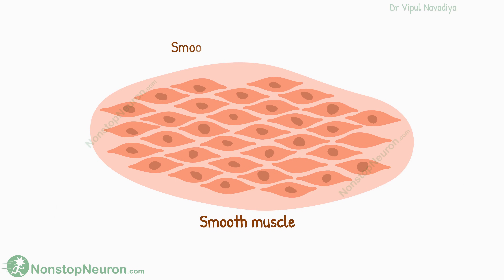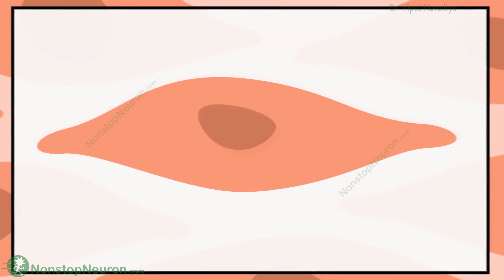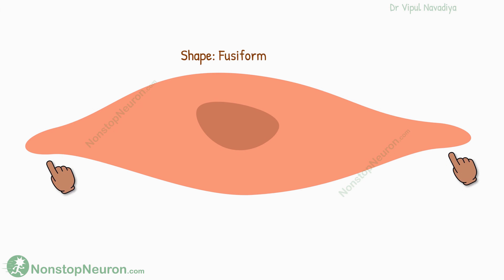A smooth muscle is made up of multiple smooth muscle fibers. The shape of the individual fiber is fusiform, which is round in the center and tapering at each end.